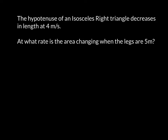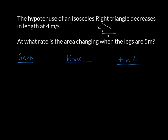We have a hypotenuse of an isosceles right triangle that decreases in length at 4 meters per second. We're going to start with some basic pieces of information. An isosceles right triangle has two sides of equal length — I'll label both as x — and a 90-degree angle. I'll call the hypotenuse L for length.